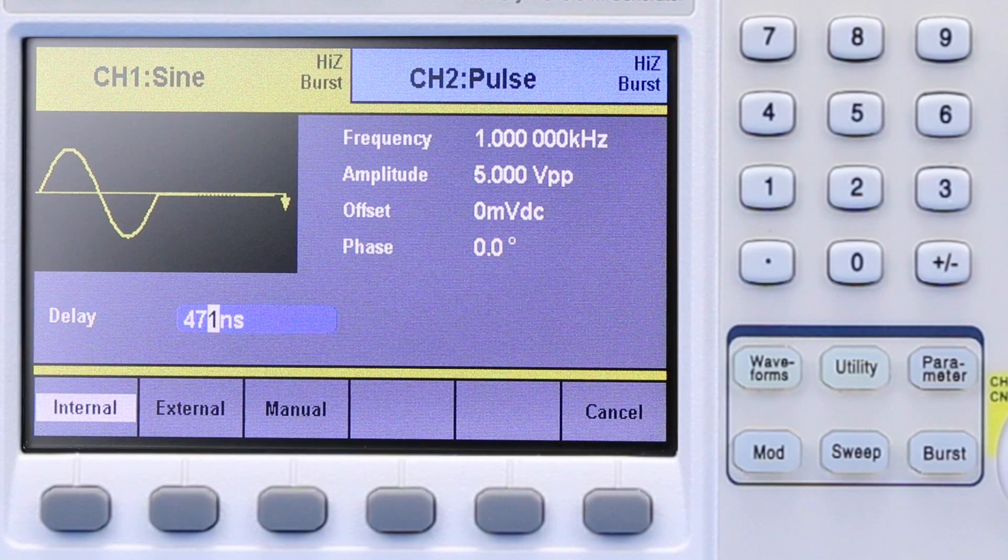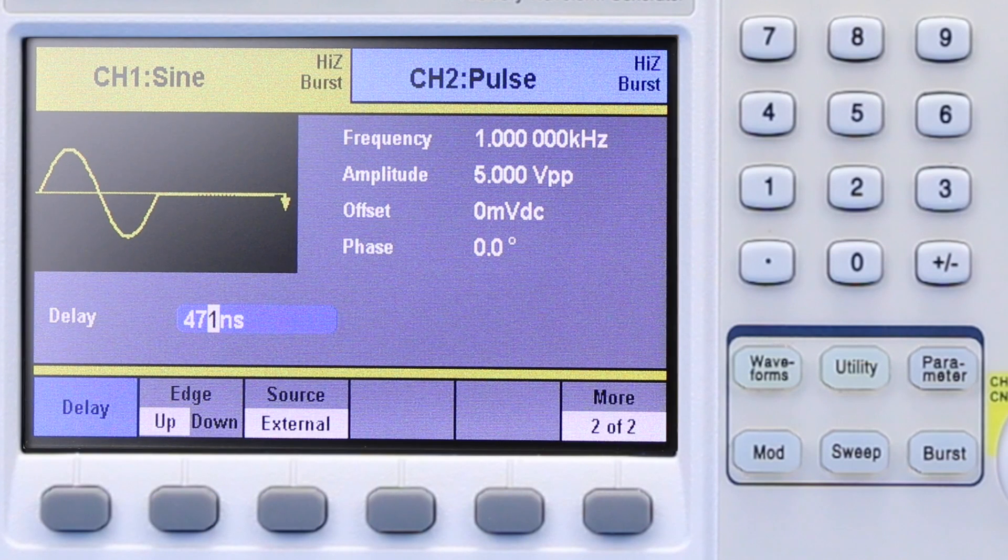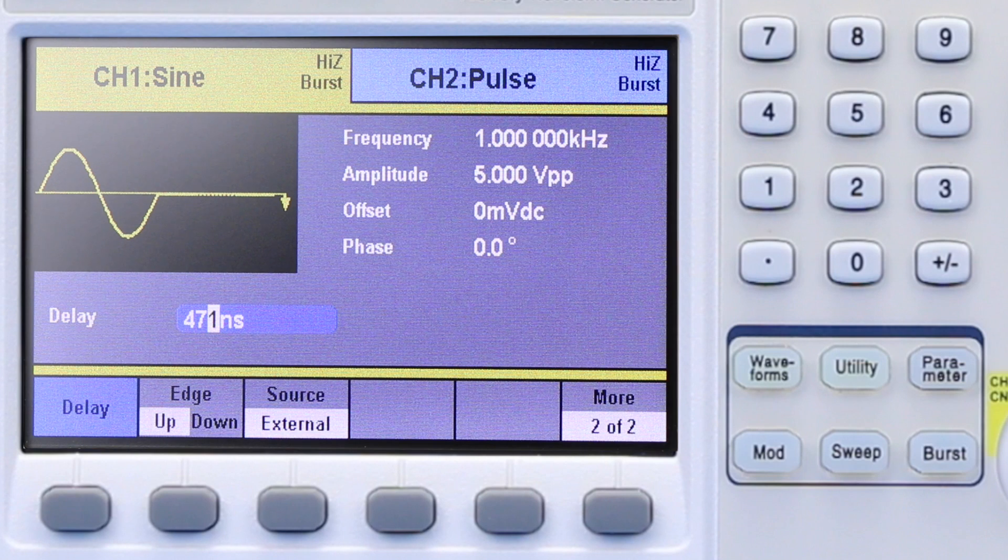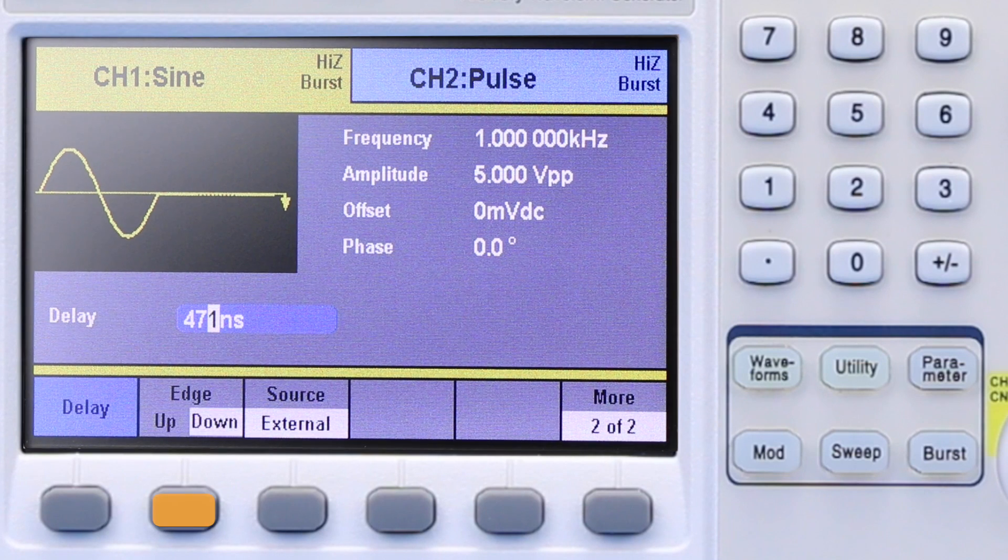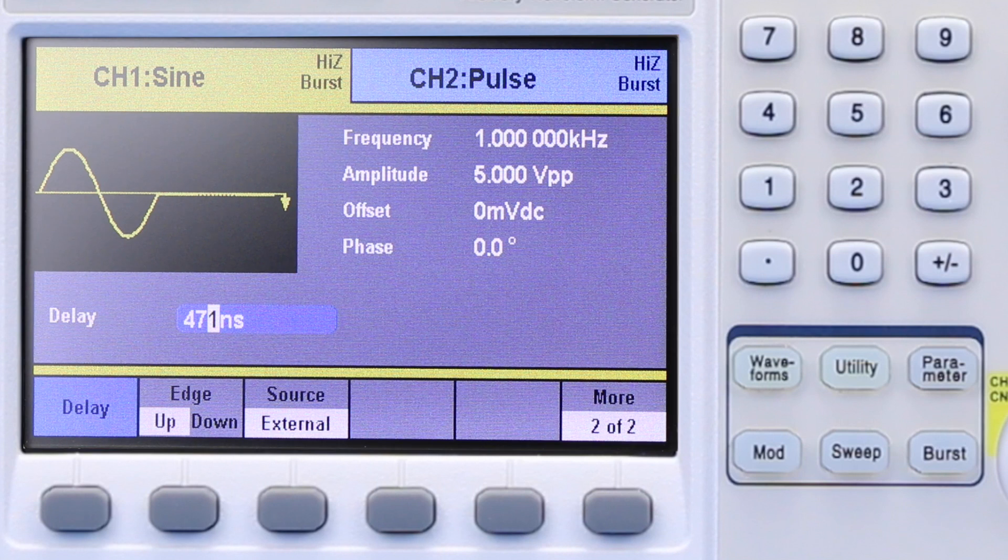On the second unit, select source and choose external. External for source will then show the edge option in the next menu. Select the up arrow or down arrow to set up the unit to trigger off the rising or falling edge of the external signal.